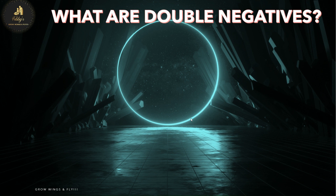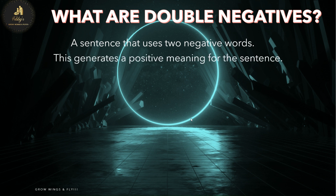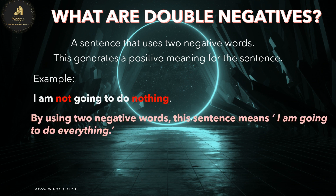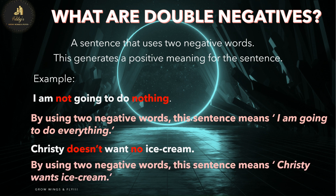What are double negatives? A sentence that uses two negative words — this generates a positive meaning for the sentence. For example: 'I am not going to do nothing.' By using two negative words, this sentence actually means 'I am going to do everything.' 'Christy doesn't want no ice cream.' By using two negative words, this sentence means Christy wants ice cream.